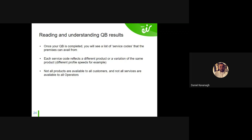Understanding your QB results: there are different statuses — line unknown, no parts available, and others. First, a good example. Once your QB is completed you see a list of service codes. Service codes are important: they're not UG order codes. Every UG service has a UG code, and every variation of that service has a service code. For example, if you qualify for DSL up to 24 megs ADSL2, we offer 12 megs, 14 megs, 18 megs variations — those are the service codes.